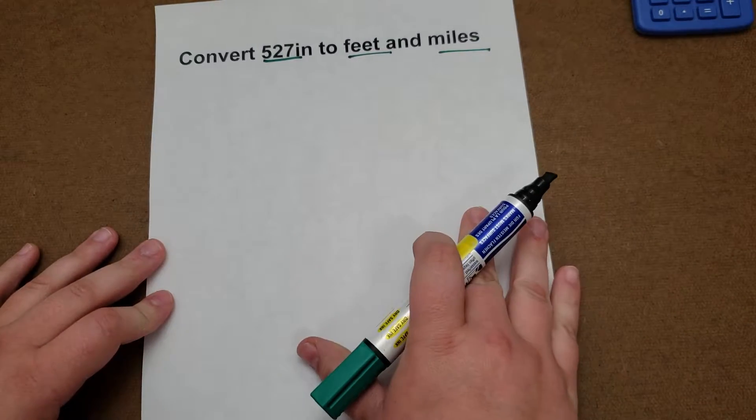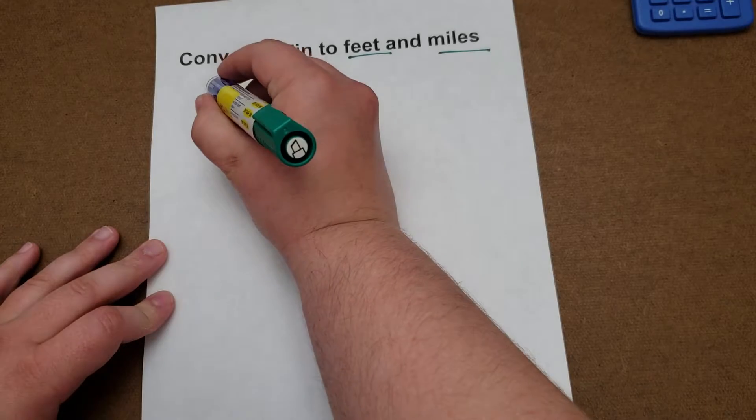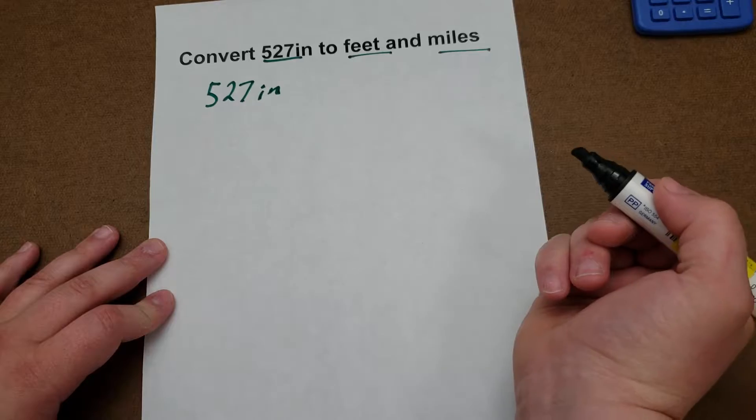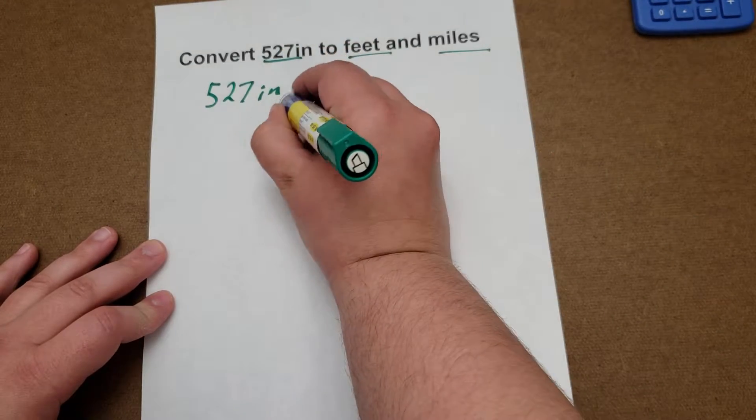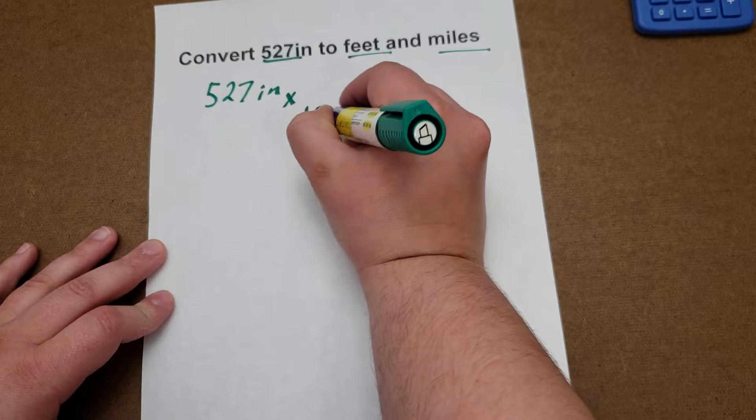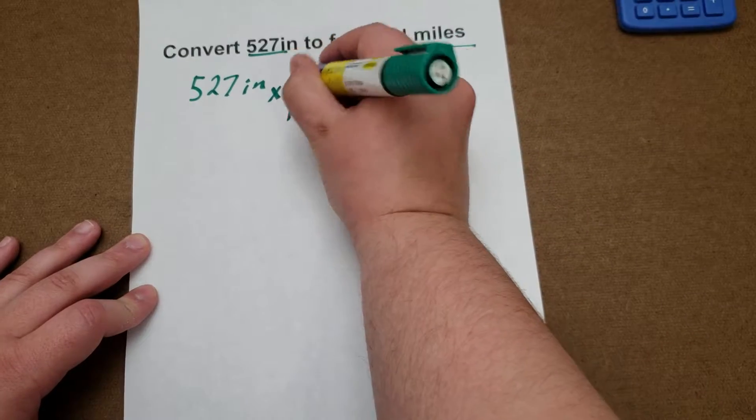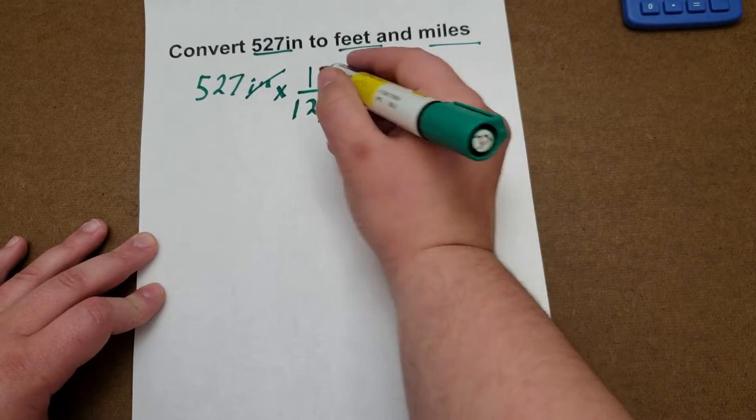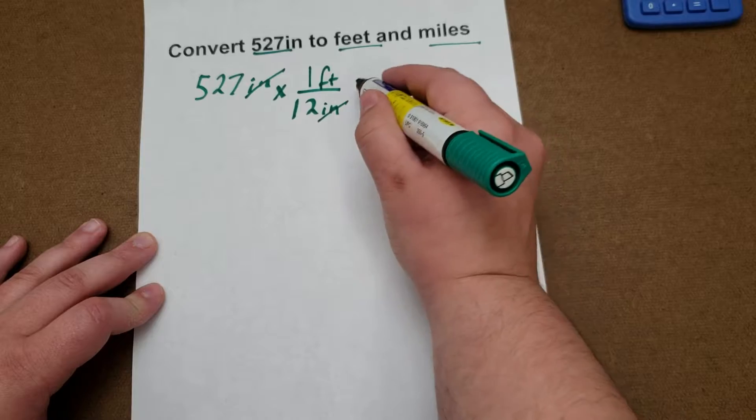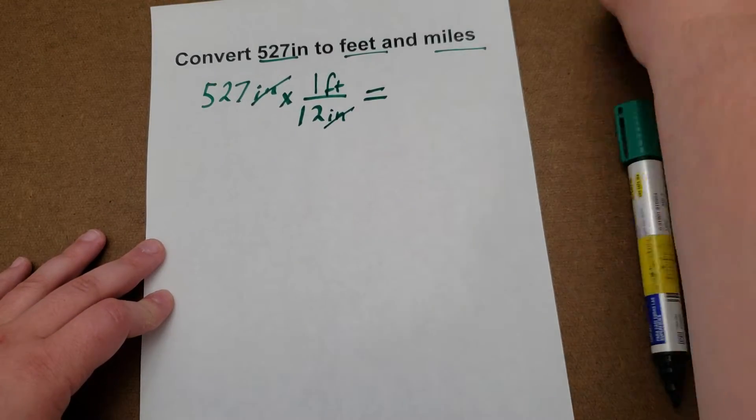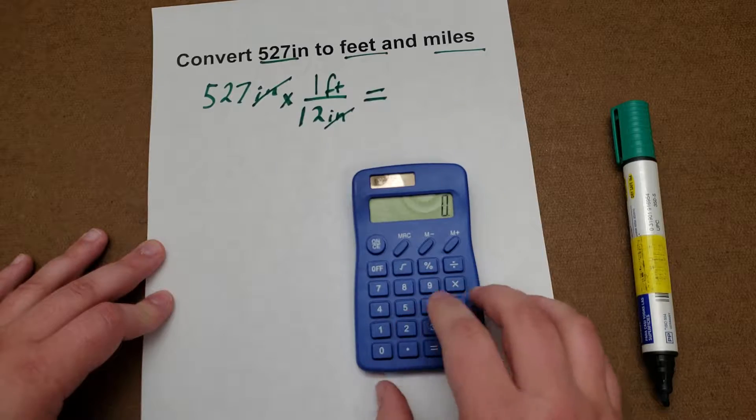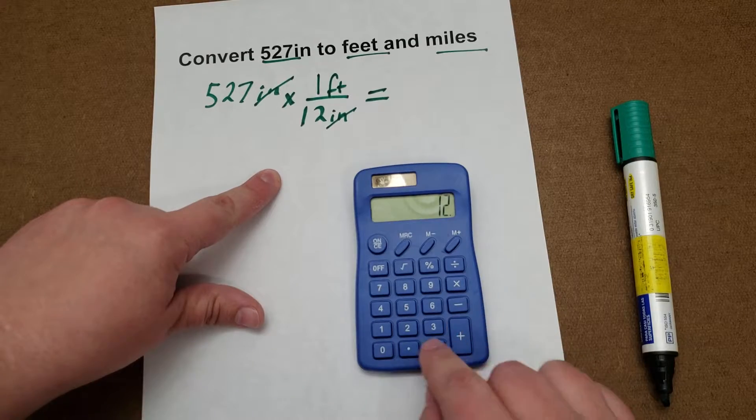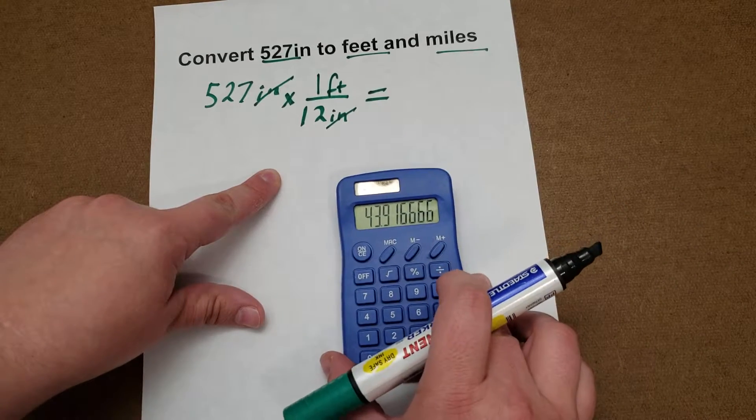So we're going to start with 527 inches, and then the conversion from inches to feet is 12 inches to one foot. So your inches will cancel, leaving you with feet for your units. So 527 is on the bottom, so we divide by 12, and we have 43.91 feet.